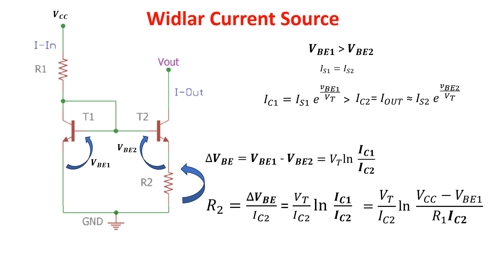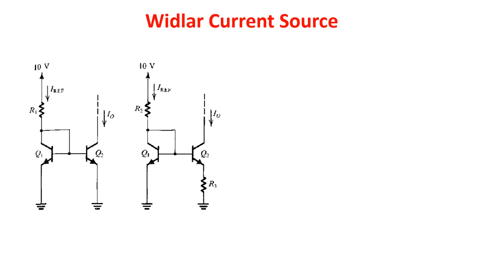One interesting feature of this circuit is that for VCC much larger than VBE1 and IC1 much larger than IC2, the output current will vary roughly as the logarithm of the supply voltage VCC, so it is relatively independent of the supply voltages.